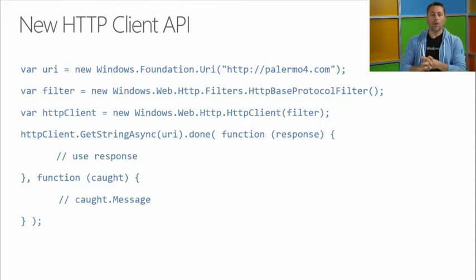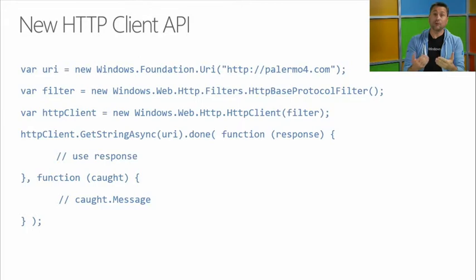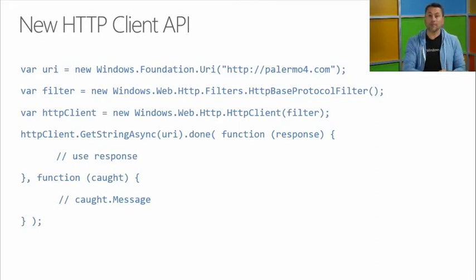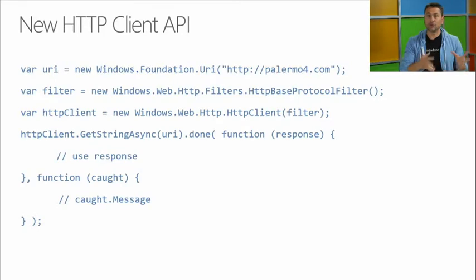Why do we have this new HTTP client and filter option? This is the suggested way for you to start doing HTTP calls from your app. It's a simplified API — you'll see in the next method that you immediately call getStringAsync, pass in the URL, and the function takes the response for you to use. If an error happens, you can request the message property. That's a pretty simple implementation.